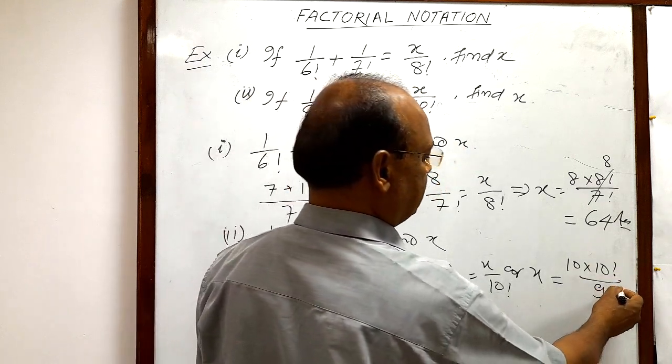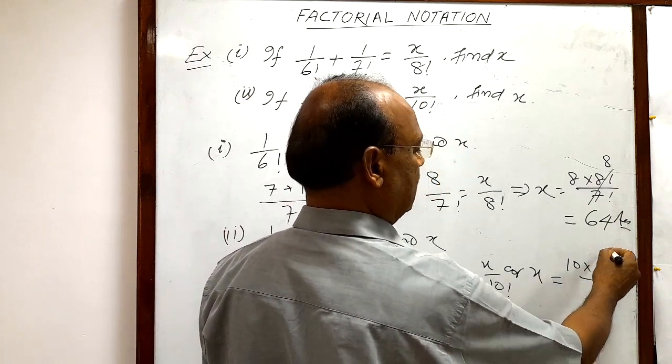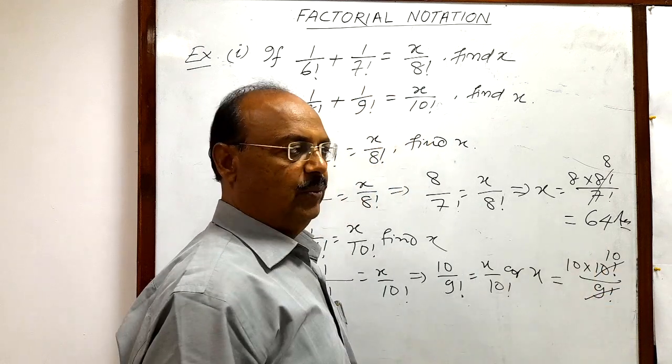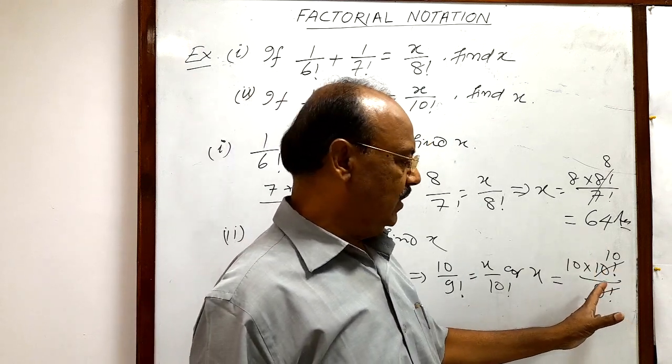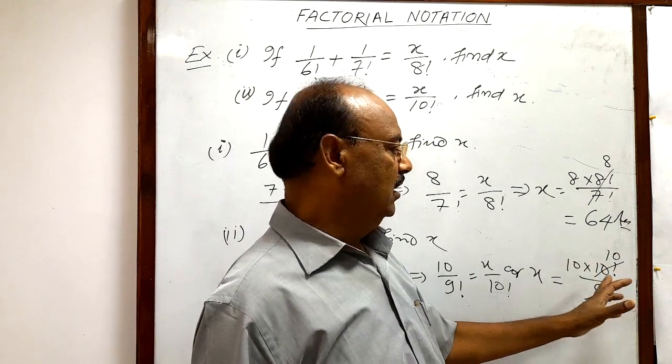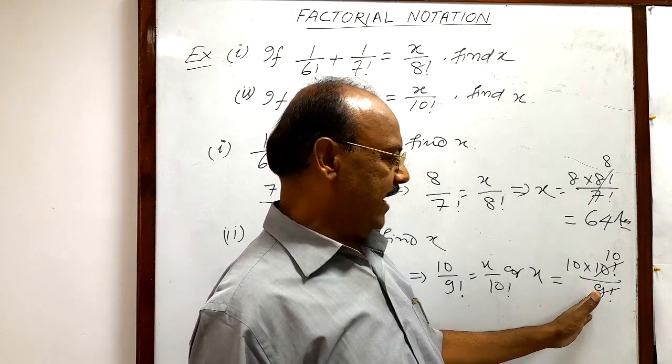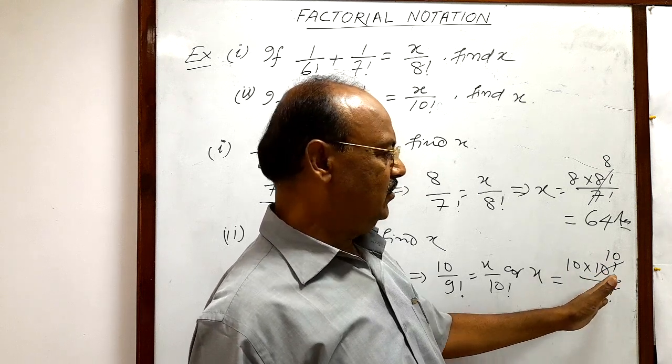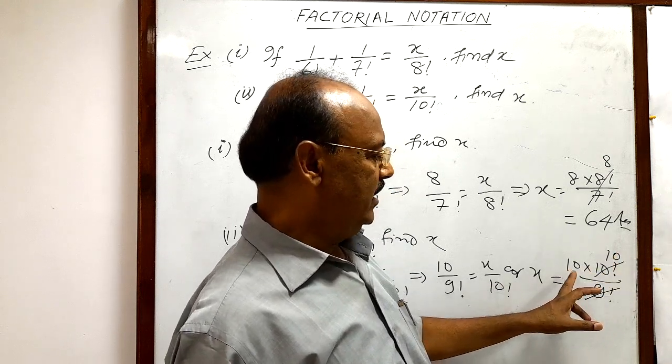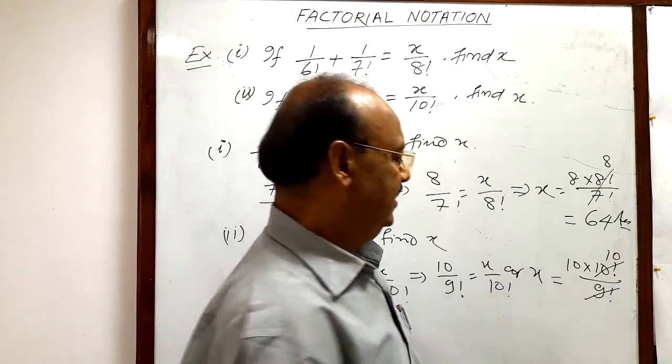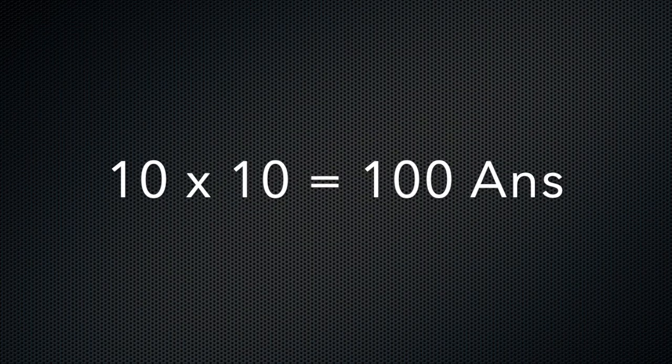We can cancel out this 9 factorial with this 10 factorial by writing here 10. Because 9 factorial is having multiples of 1, 2, 3, 4 up to 9 and here in 10 factorial 1, 2, 3, 4 up to 10. So first 9 numbers will be 1, 2, 9 will be cancelled out and we will get here 10. So finally we are getting 10 into 10. This is equal to...